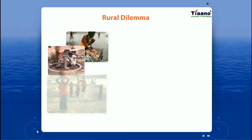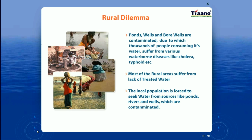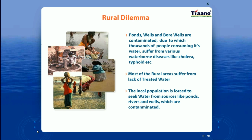Most rural areas suffer from a lack of treated water, forcing the local population to seek water from contaminated sources like ponds, rivers, and wells. In urban areas, some people have access to treated water, but most have to contend with groundwater or untreated water.